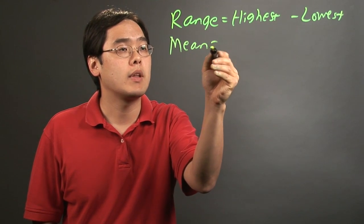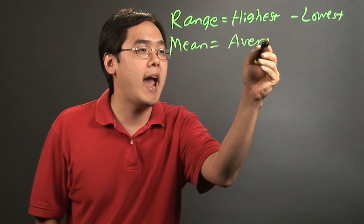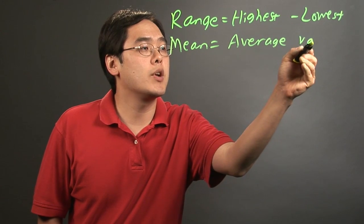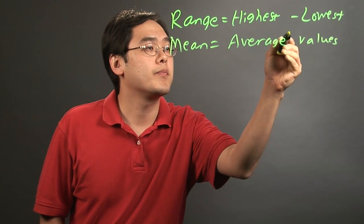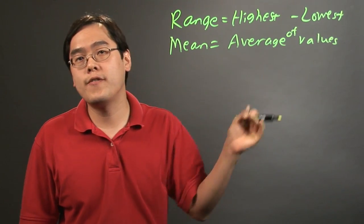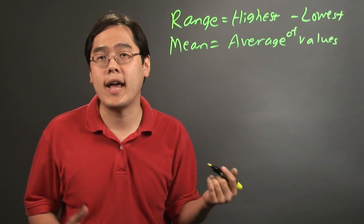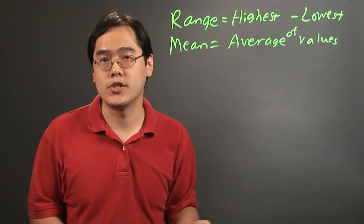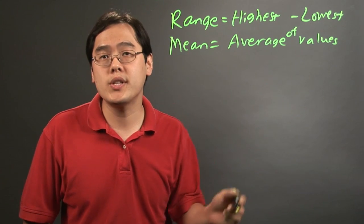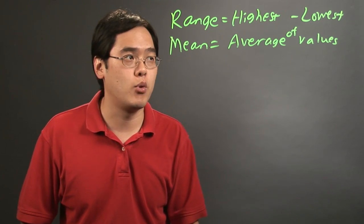Now the mean is just another way of saying finding the average of the values. So what you're really doing is you want to add all the figures that you have and then divide by how many total numbers you have to work with. Basically you add all the data points and divide by the total number of data points.